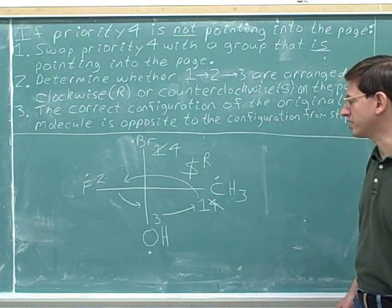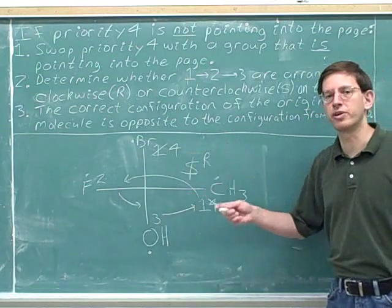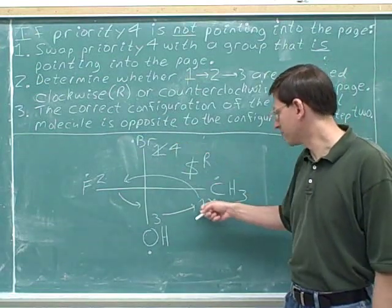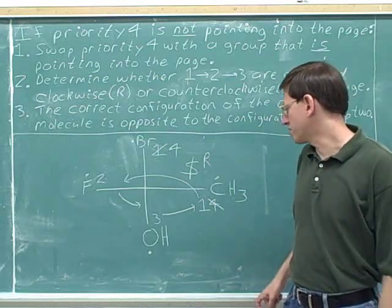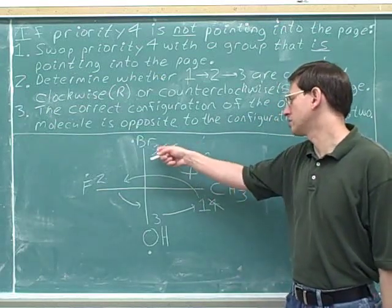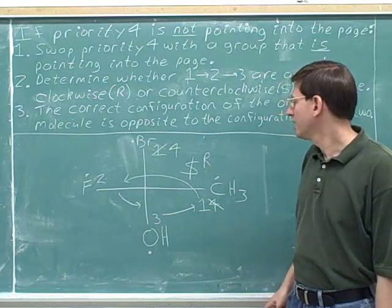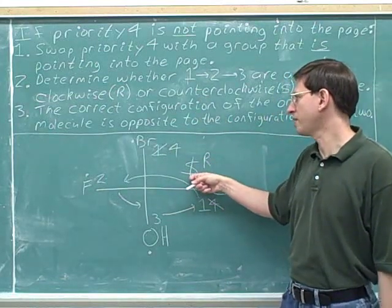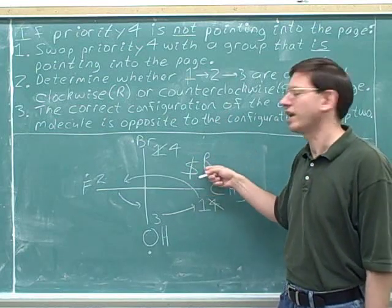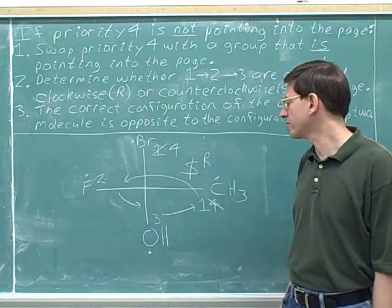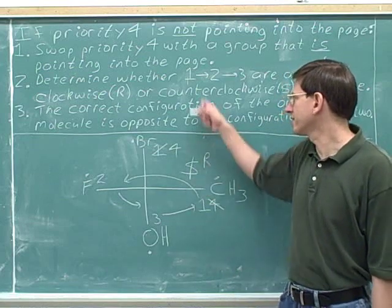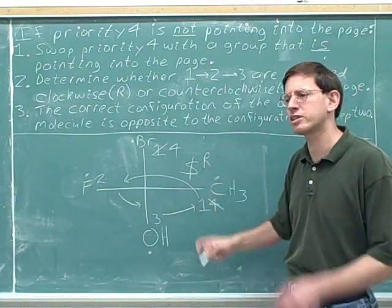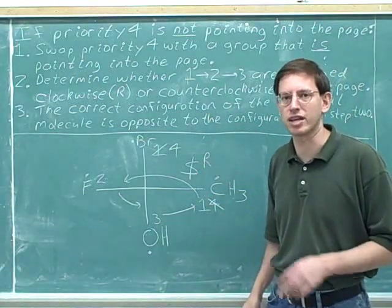We've demonstrated good notation for this type of problem. Write down the priority numbers, then cross out the priorities that you're swapping and put in the new priority numbers. It's not necessary to move the atoms — you can just swap the numbers. Then write down in step two whether the configuration is R or S, and in step three cross out the original letter and write down the opposite letter. This makes it less likely to make careless mistakes, especially when you're just learning this method.